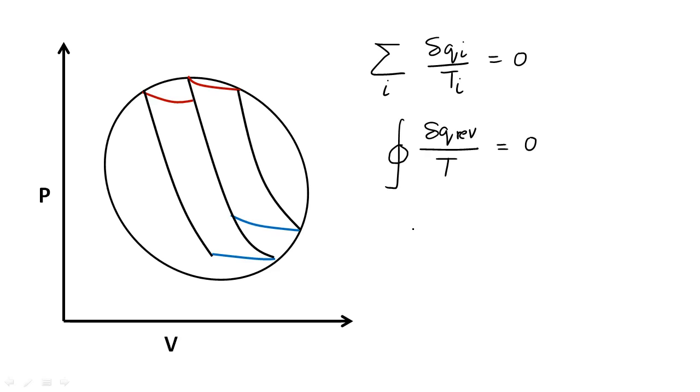We call this new property as entropy and denote it as S. So this term here is the change in entropy DS. We still don't know what this S means. All we know is that it is a state function. That is, it is a property of the system and its changes are given by delta Q reversible by T. Since it is a new property of the system, it needs to be explored to understand what it tells us about the system. And that is exactly what we will do.